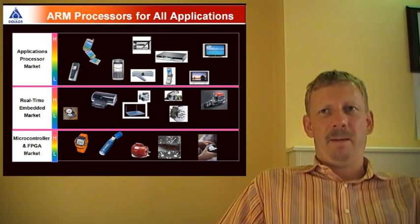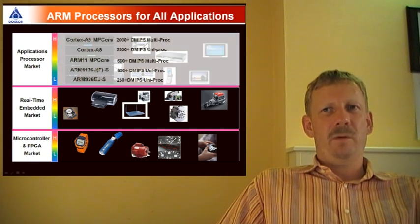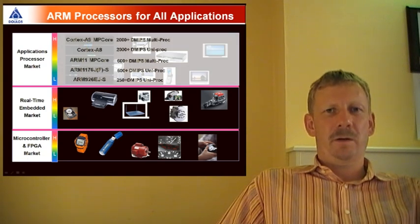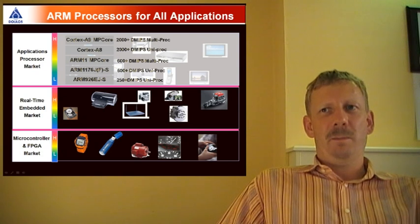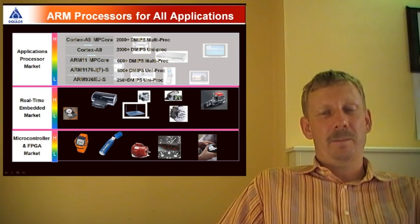The Cortex-A architectures are for the application market and include an MMU for applications like mobile phones, TVs, and set-top boxes.